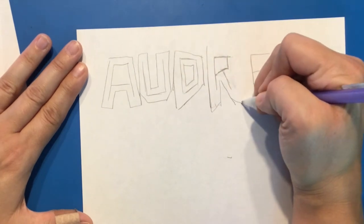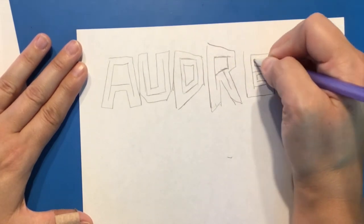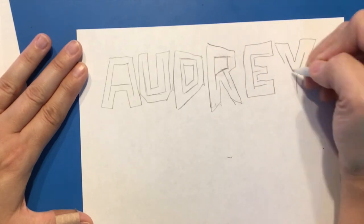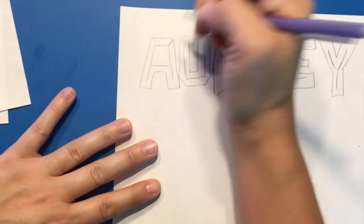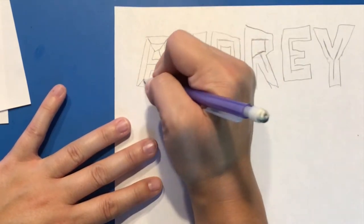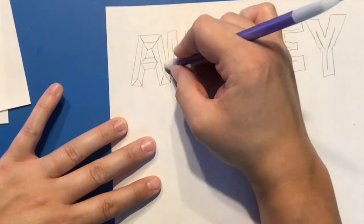If you have an opening in your letter, you also have to draw the outline on the inside of the letter where the opening is in order for this to work. Again, use your block letter to go around your stick letter.